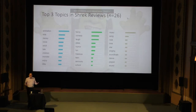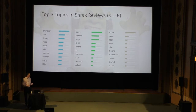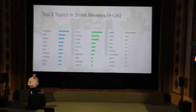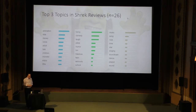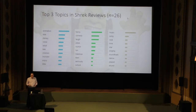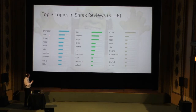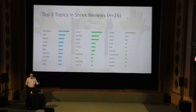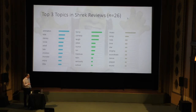So how does this algorithm actually work? What's going on in terms of the assumptions it makes? Let's look at a specific example — here are the top three topics for Shrek. The topics themselves are pretty coherent. We have a topic that's animation, one that's clearly comedy, and one that's clearly music. This makes sense because Shrek is an animated movie that's a comedy and a musical.